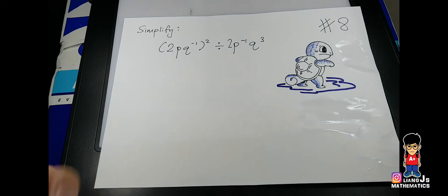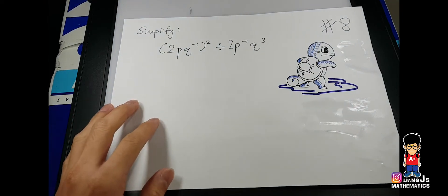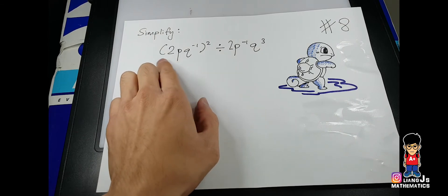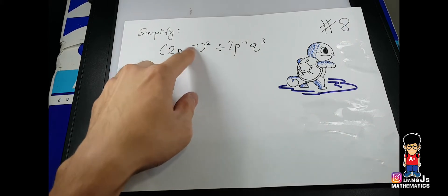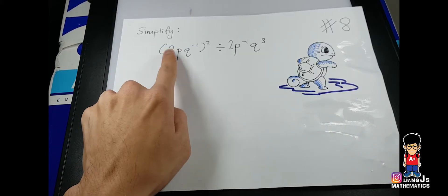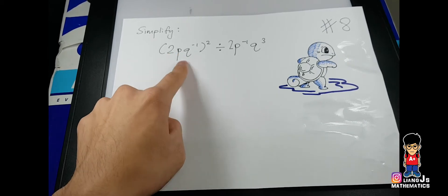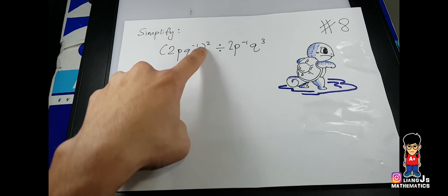You can see this bracket has how many bases inside? Total there are 3. You see, you have 2, P, and Q over here. So how many bases there? Bracket means times, so you will share to them how many times.